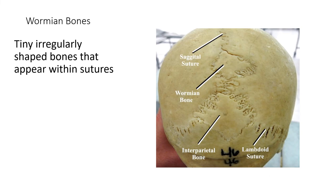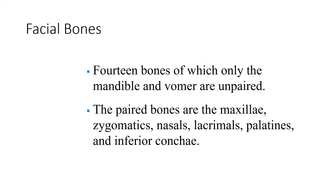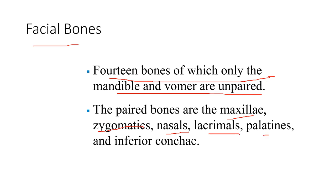Wormian bones are found within sutures — another name for them is sutural bones. They're tiny, irregularly shaped bones that appear within sutures. You can see one right here within the sagittal suture — all of a sudden there's a larger bone separated within that suture. There are 14 facial bones, of which only the mandible and the vomer are unpaired. The paired bones are the maxilla, zygomatic bones, nasal bones, lacrimal bones, palatine bones, and inferior conchae.